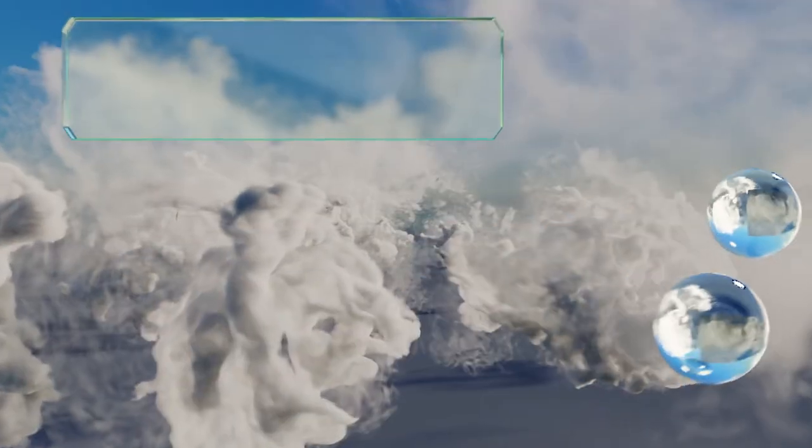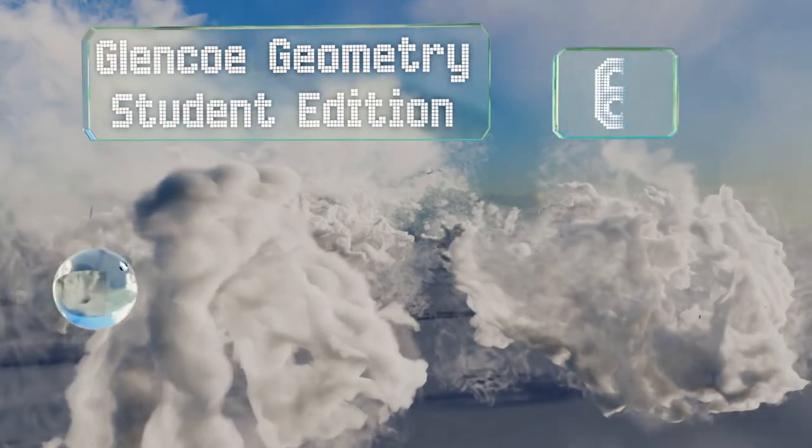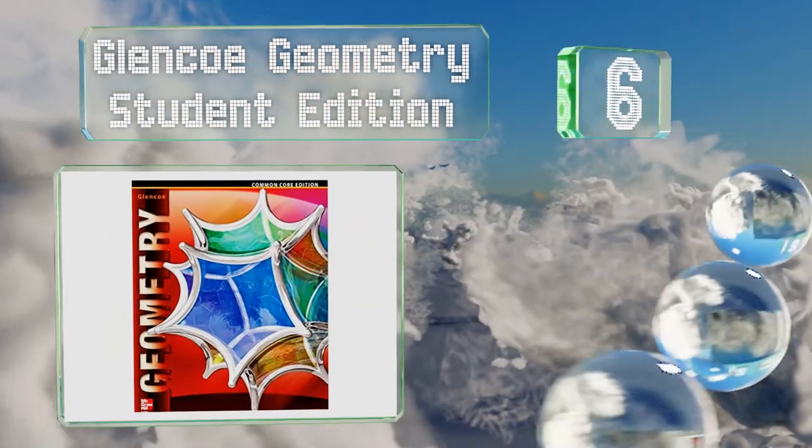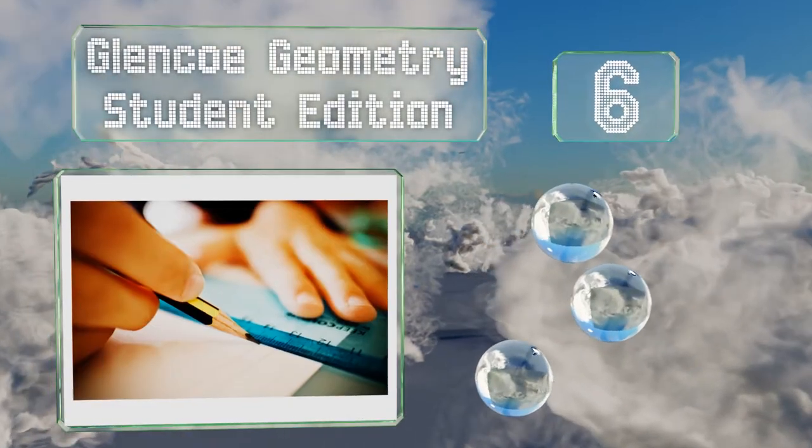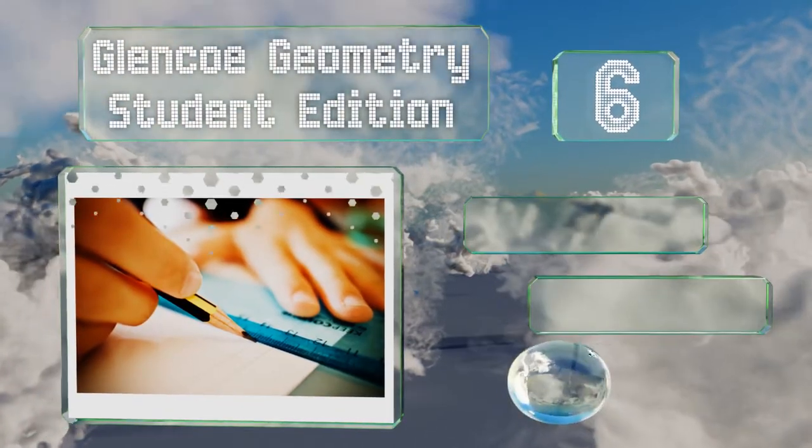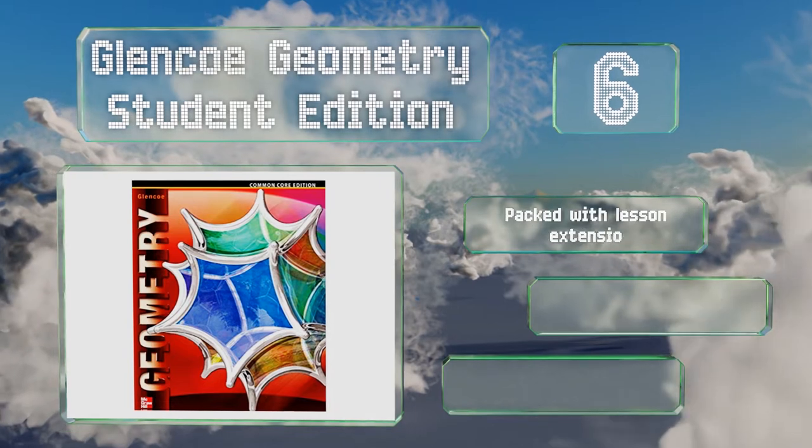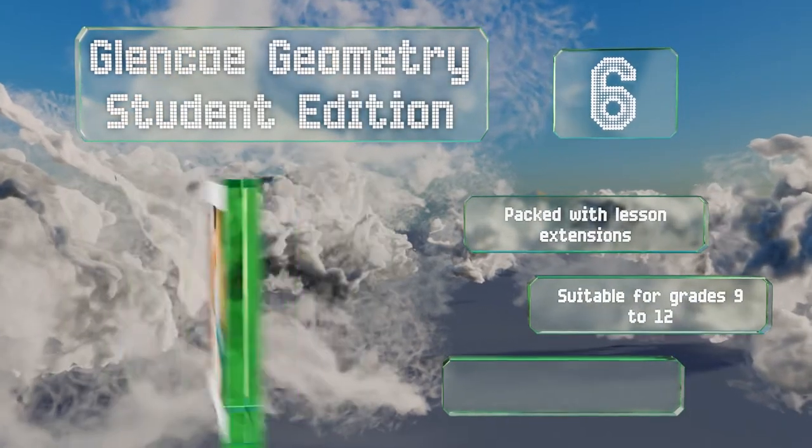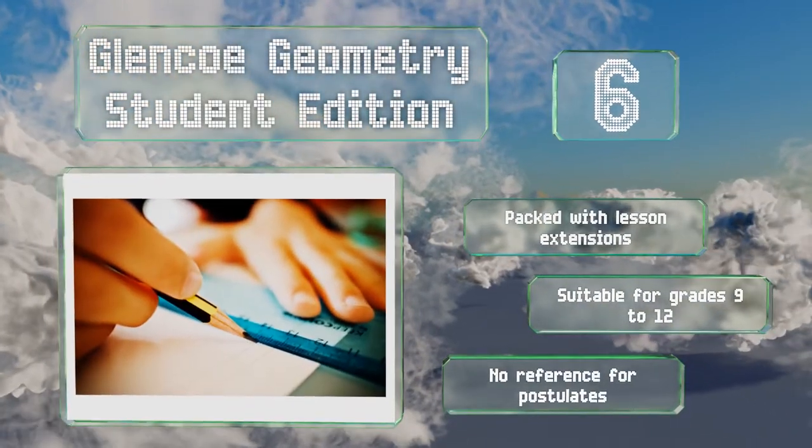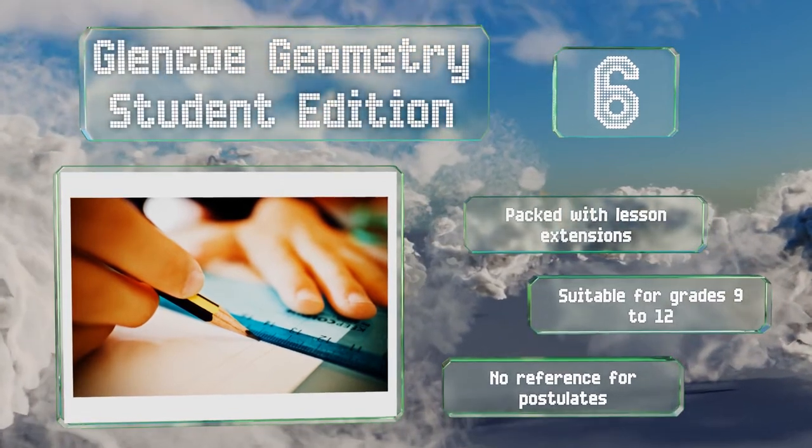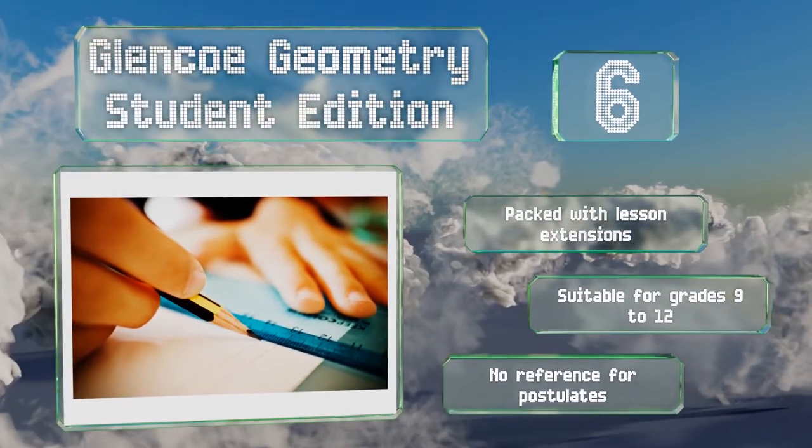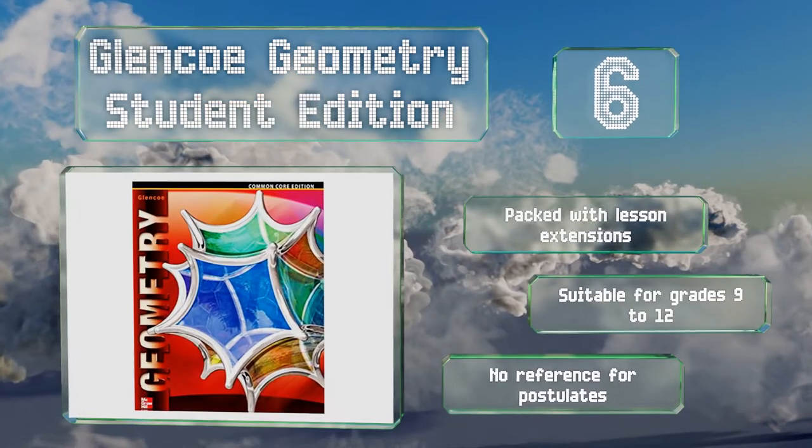Moving up our list to number six, high school students concerned with adhering to Common Core guidelines should find what they need in Glencoe Geometry Student Edition, which features content aligned with the standards of mathematical practice. It teaches readers to reason abstractly and quantitatively. It's packed with lesson extensions and suitable for grades 9 through 12. However, there's no reference for postulates.